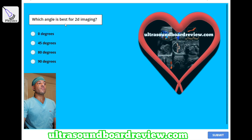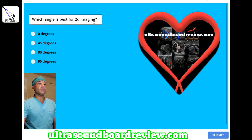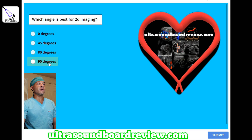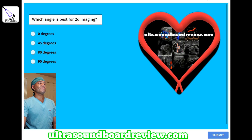Which angle is best for 2D imaging? A) 0 degrees, B) 45 degrees, C) 80 degrees, or D) 90 degrees? The answer is D, 90 degrees.